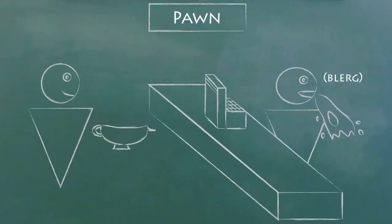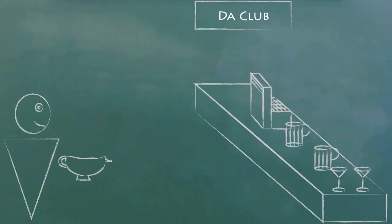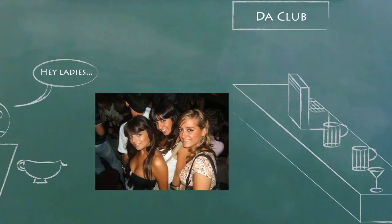So taking Aunt Agnes' heirloom crystal gravy boat because you want to sell it is larceny, whereas taking Aunt Agnes' heirloom crystal gravy boat clubbing without her permission is not, because you plan to return it when you're done.